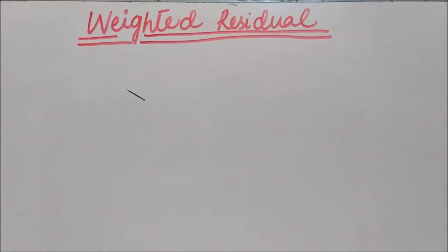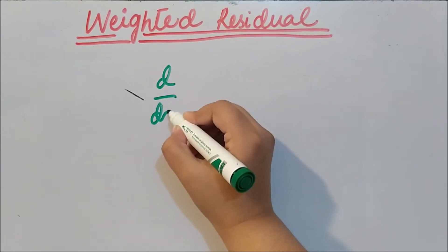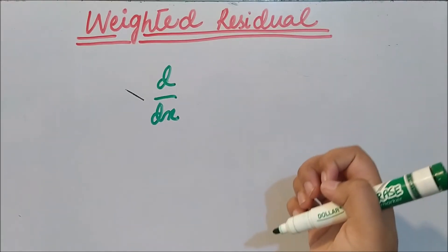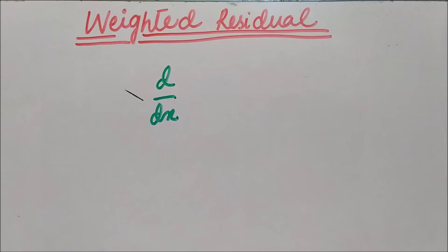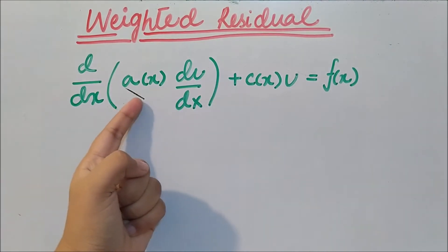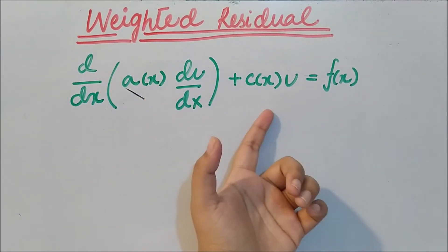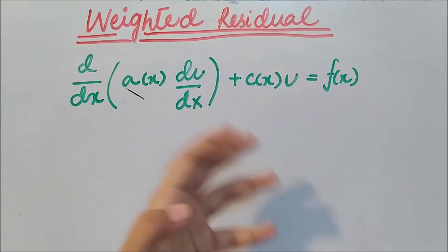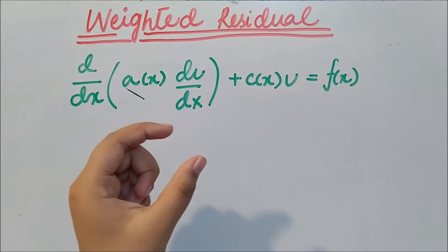Before going into the detail of the weighted residual method, let's write a general differential equation first — that is dy/dx — and we will consider the same prime variable, the field variable or the prime variable of the displacement, represented by u. We will write the general differential equation according to that displacement variable. We have three different functions: a(x), c(x), and f(x). These three functions are basically defined according to the situation in every problem, and they are generally known as the known functions.